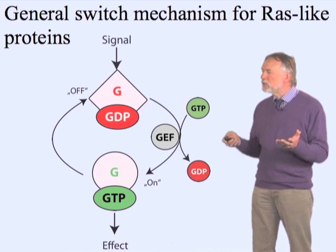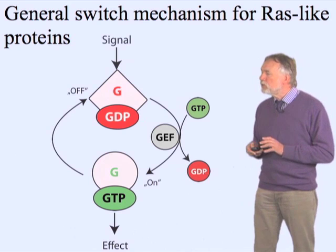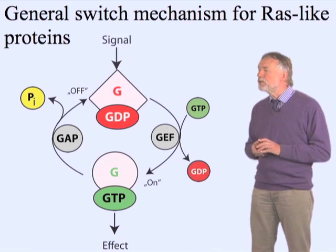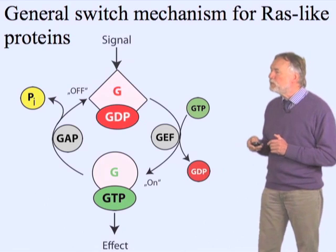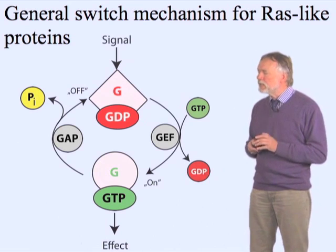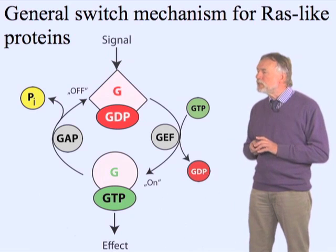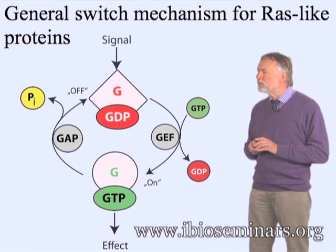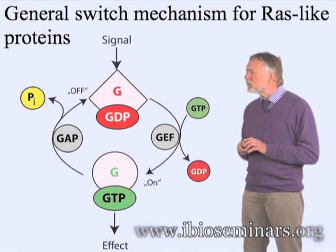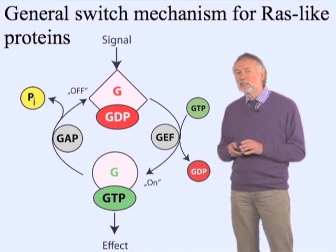Now it can do its effect, but since it's a molecular switch, you want it to be switched off again. The way you do that is not the reverse exchange of GTP for GDP, but rather the irreversible step: GTPase hydrolysis. GTP is hydrolyzed to GDP and Pi, and there is another protein that stimulates that reaction, because it is intrinsically very slow. It becomes stimulated by a protein called GTPase-activating protein, or GAP. That is where you see a lot of diseases being due to inability to hydrolyze GTP.